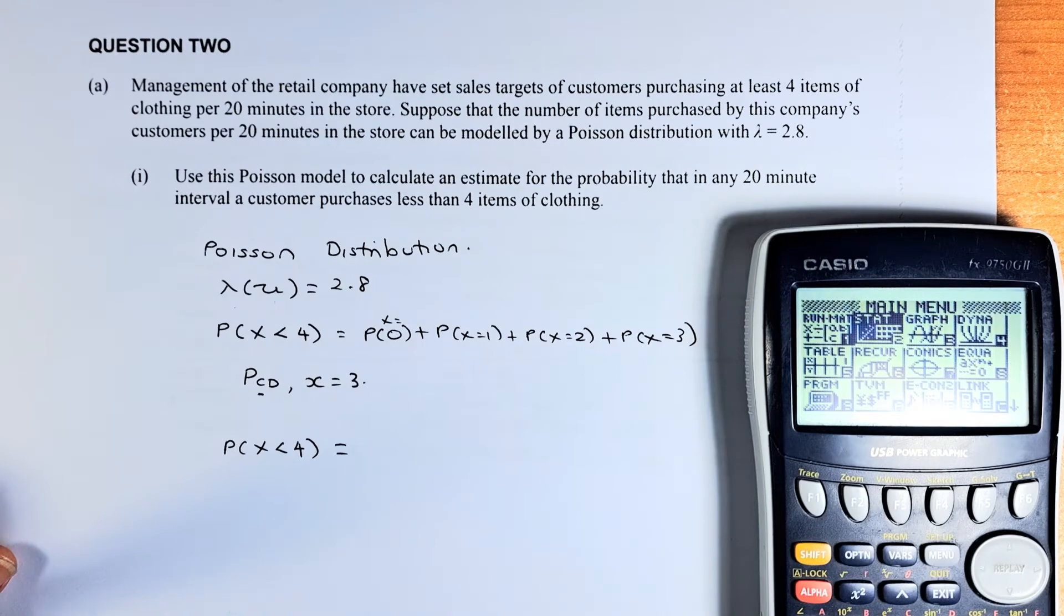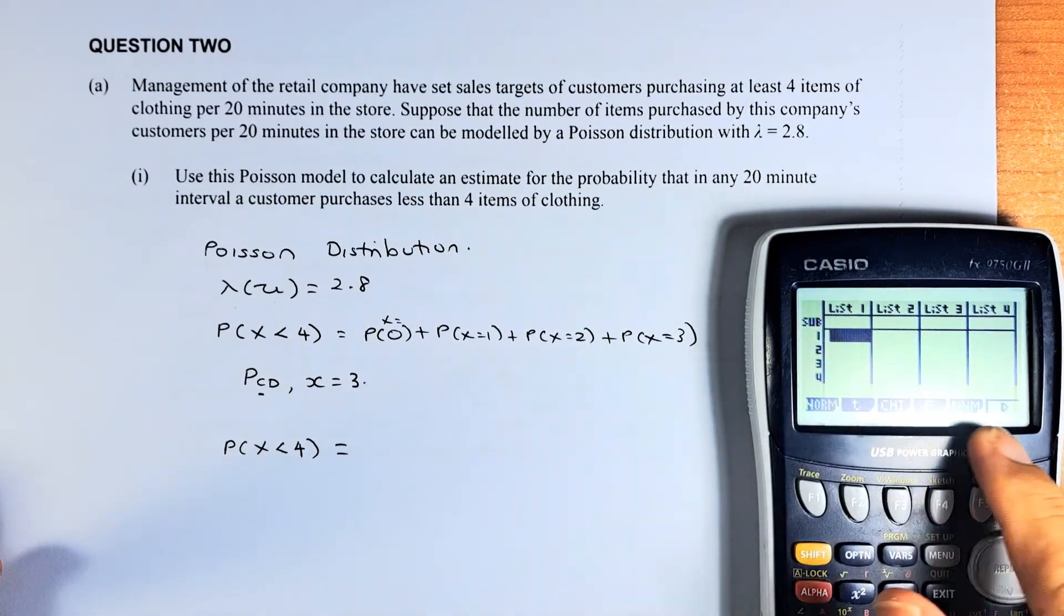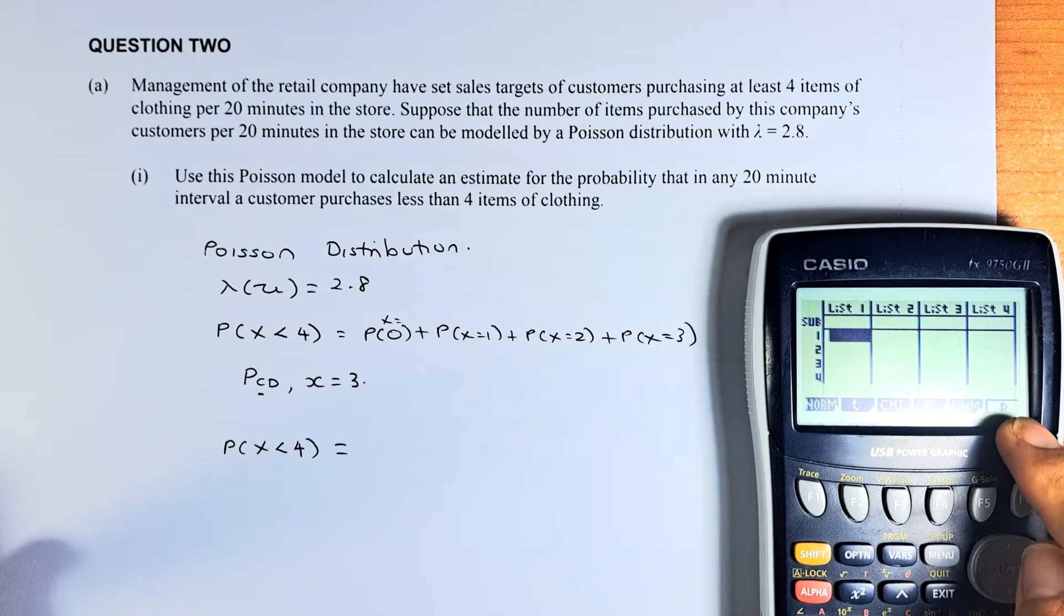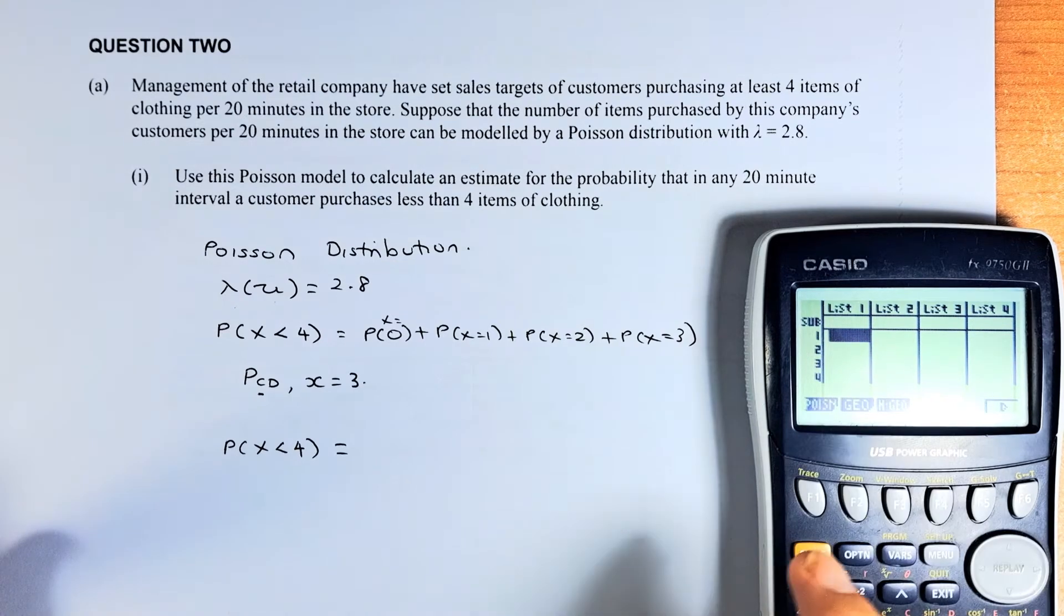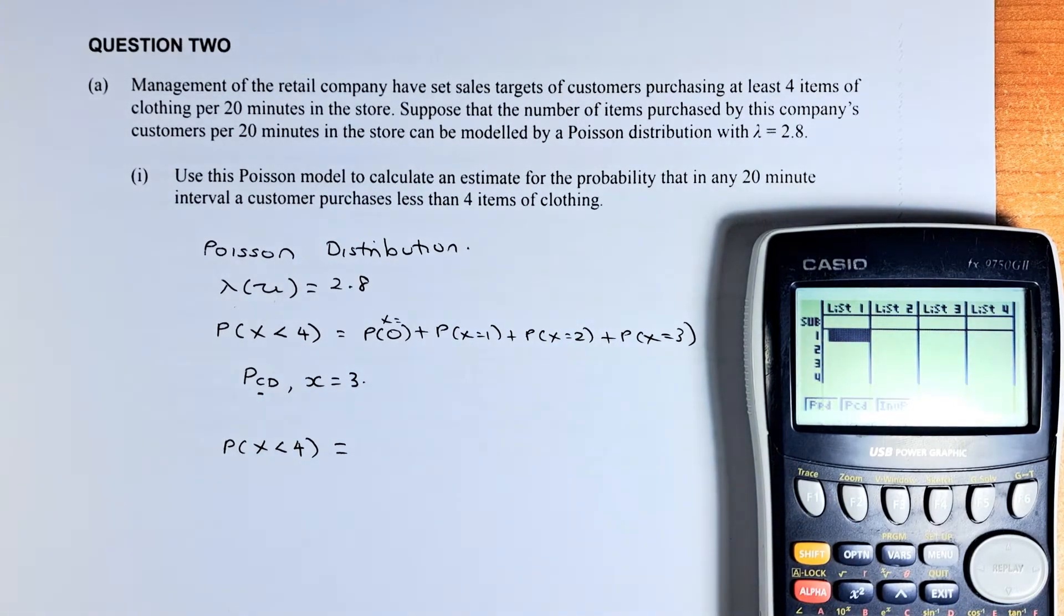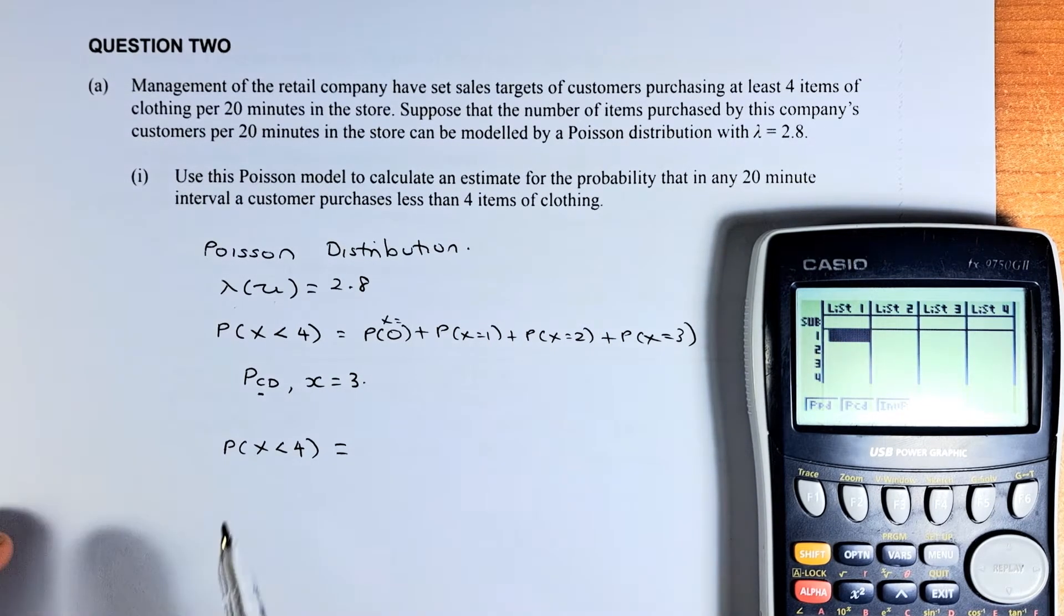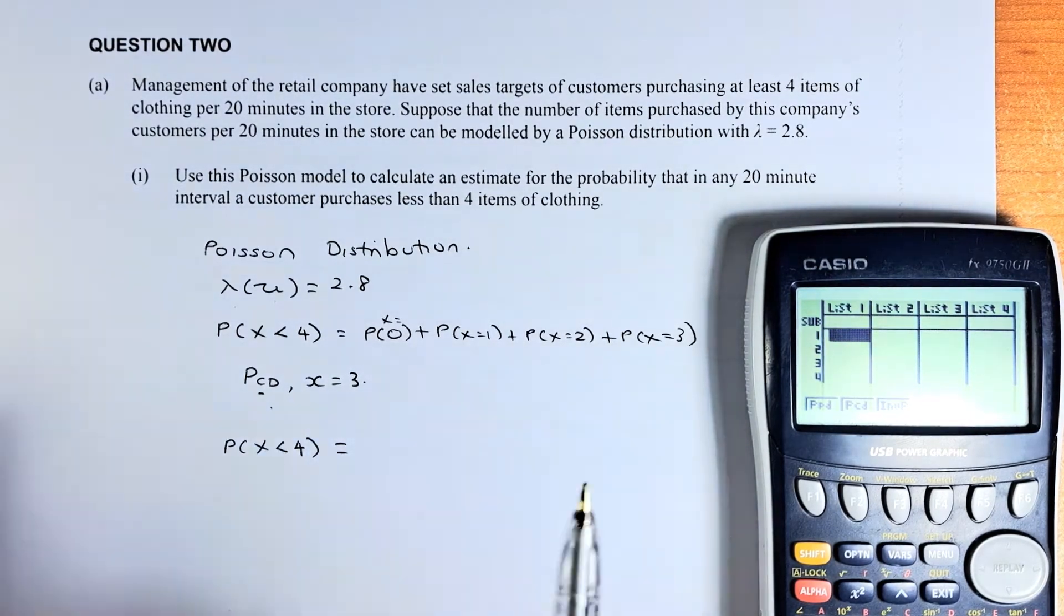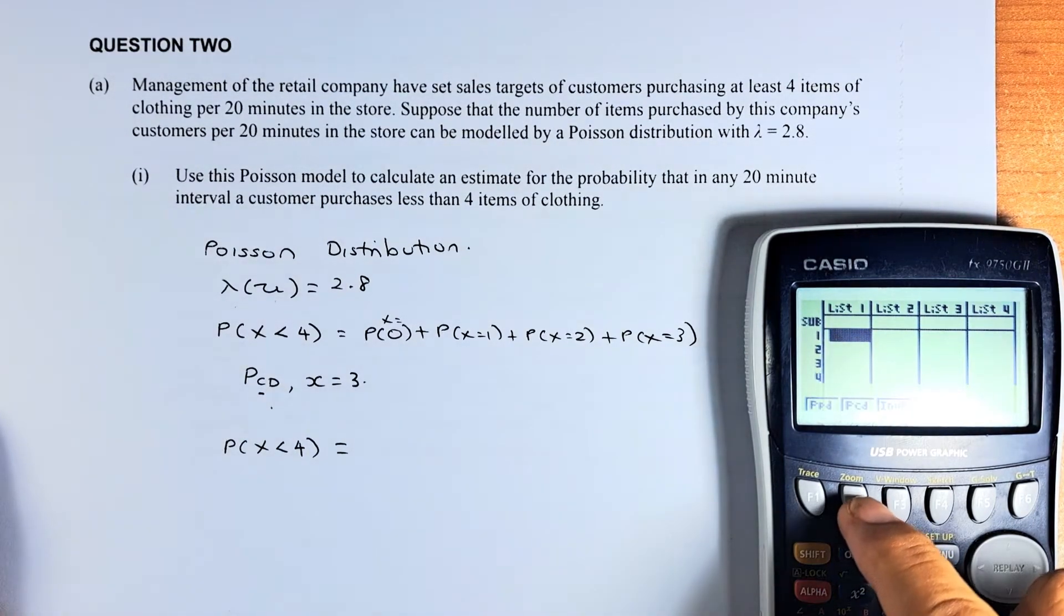Go to Statistics, then go to Distribution. Because it is Poisson, there is no Poisson there. You go and click F6. There is more button for more distributions. You have to press F6. And Poisson is now F1. Press F1. Now you have PPD or PCD. You have to use PCD because it is cumulative from 0 to whatever number. So we are going to press the PCD button.